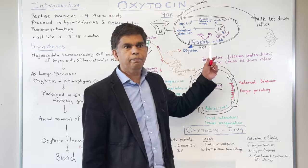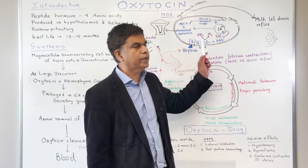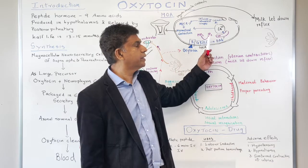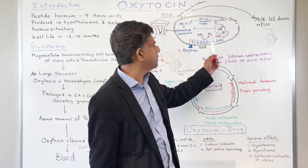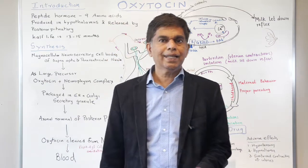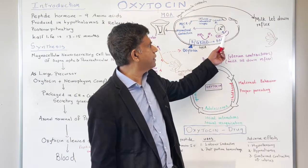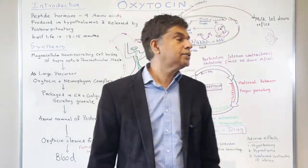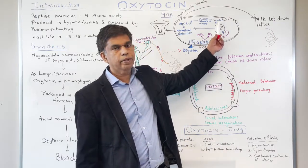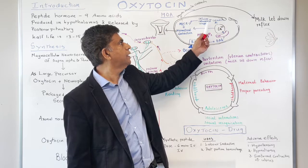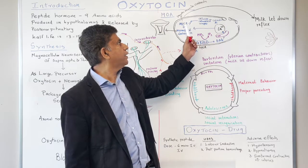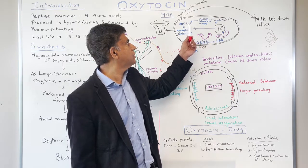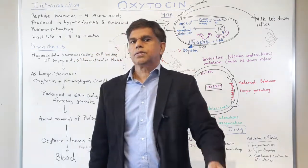The G-protein coupled receptor activates phospholipase C. This produces two things: phosphatidylinositol triphosphate (PIP3) is converted into inositol triphosphate (IP3), and 1,2-diacylglycerol (DAG) is also produced. IP3 goes to the endoplasmic reticulum, causing calcium release. Calcium binds to calmodulin — a calcium binding protein — forming a calcium-calmodulin complex, which activates myosin light chain kinase. The final action is myometrial contraction, and the baby is delivered.